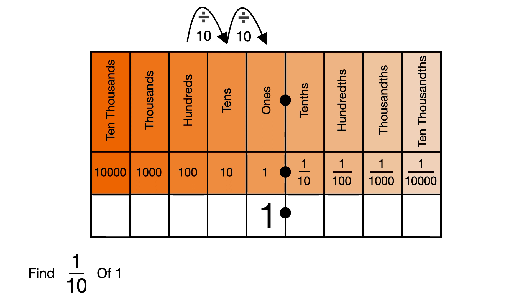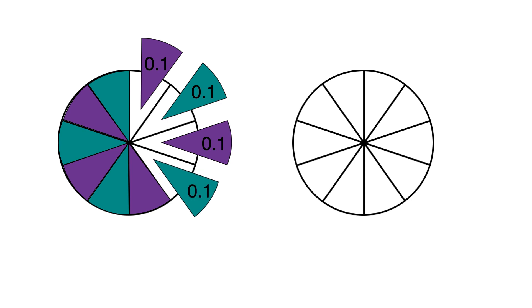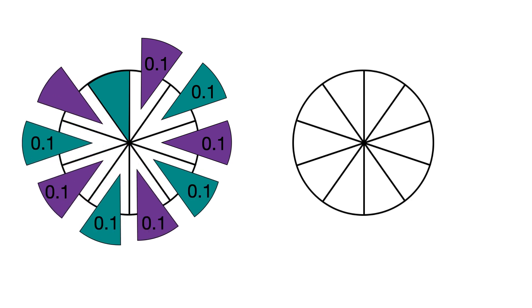When we move the digit 1 one place to the right, we divide 1 by 10. The 1 is now in the tenths column and we put a 0 in the empty 1s column just to make it easier to see what number we have. We can see that 1 divided by 10 is 0.1. There are 10 0.1s in 1. We have chopped 1 into 10 equal bits and each piece is worth 0.1.